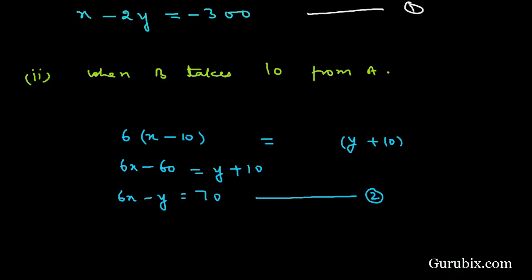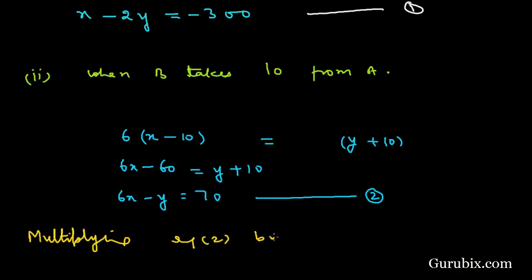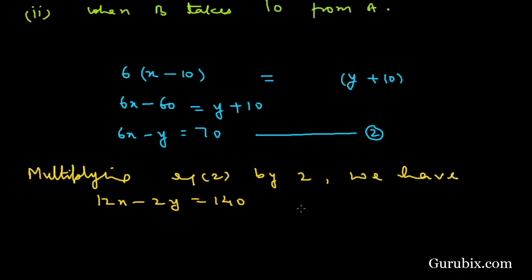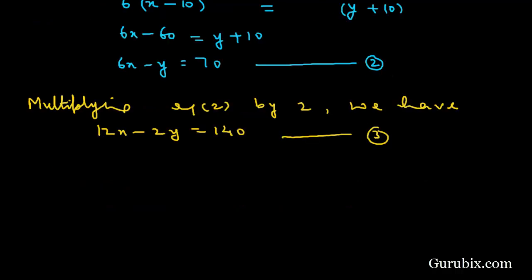Now we shall solve these two equations using the elimination method. We multiply equation number 1 by 1 and equation number 2 by 2. Multiplying equation number 2 by 2, we get 12x − 2y = 140. We call this equation number 3.